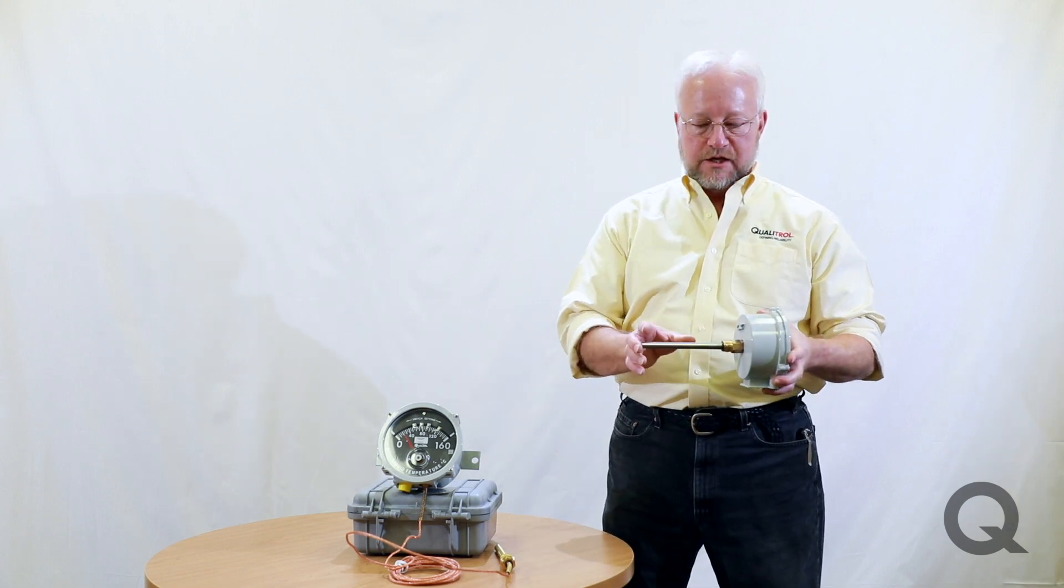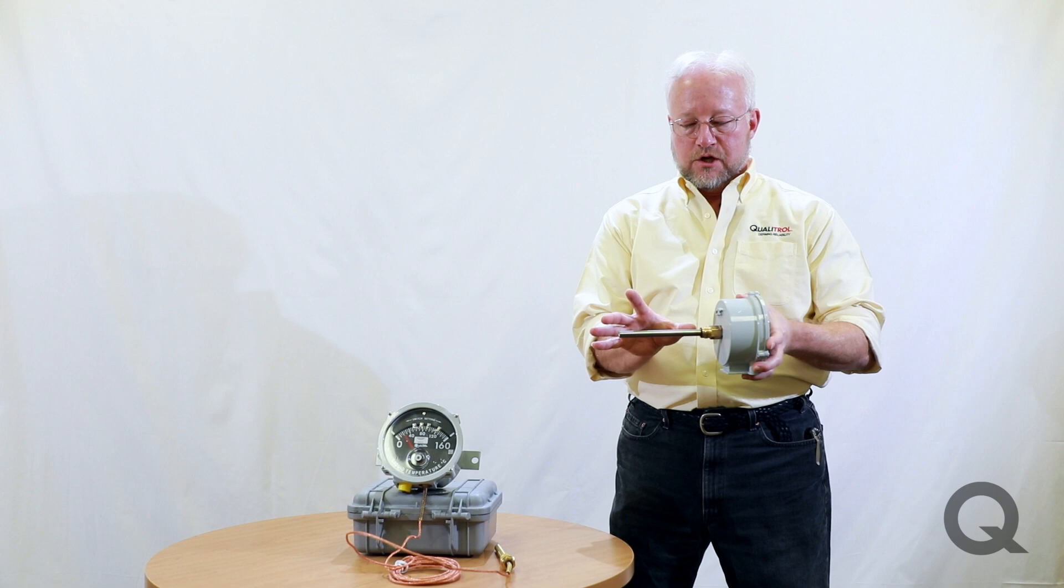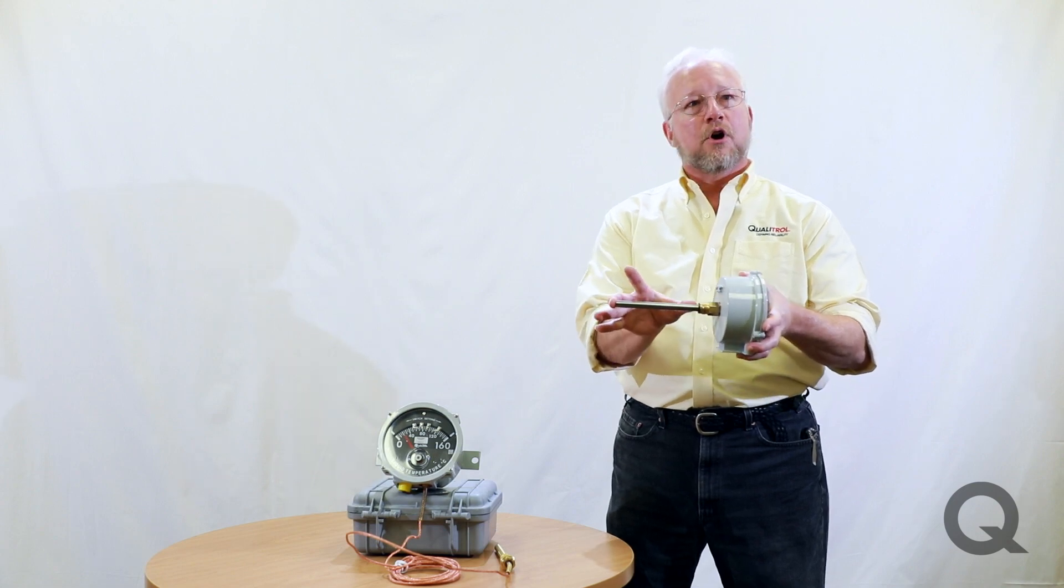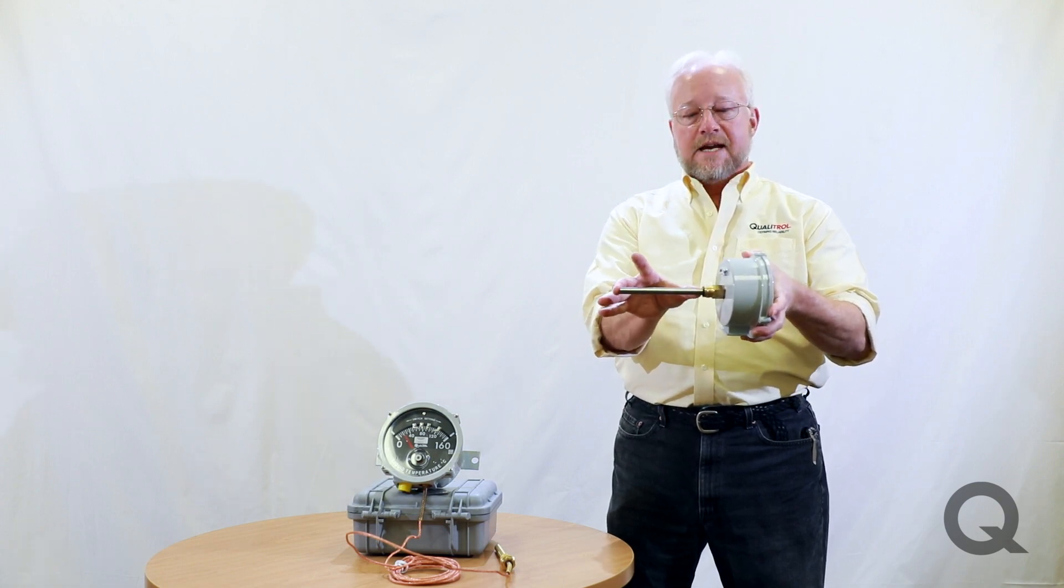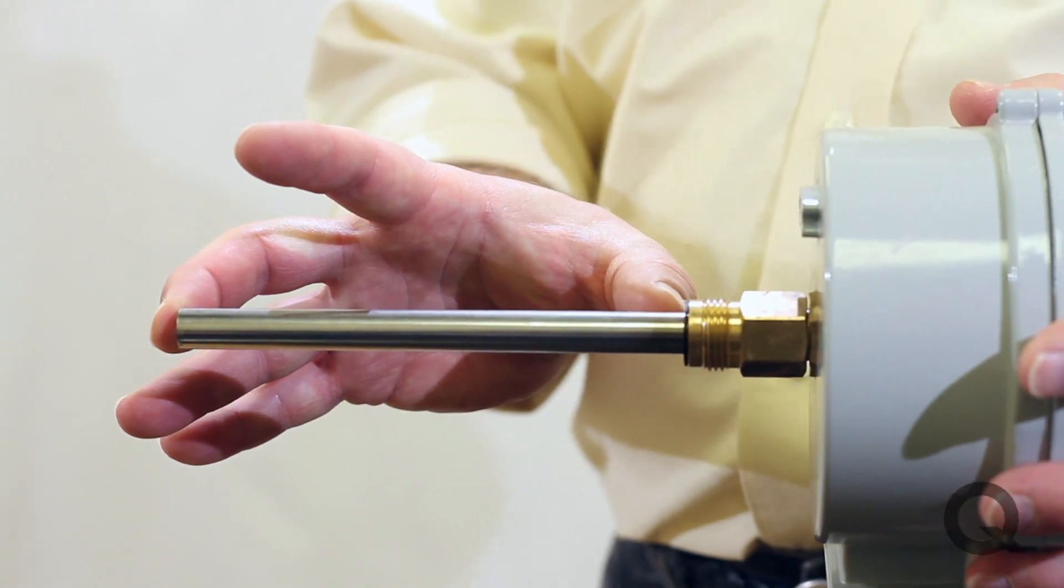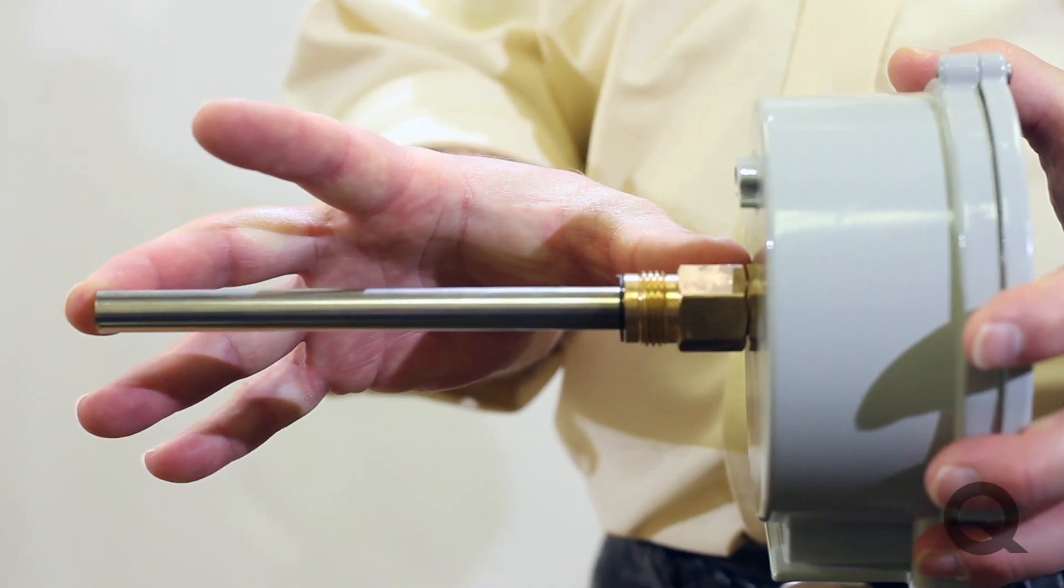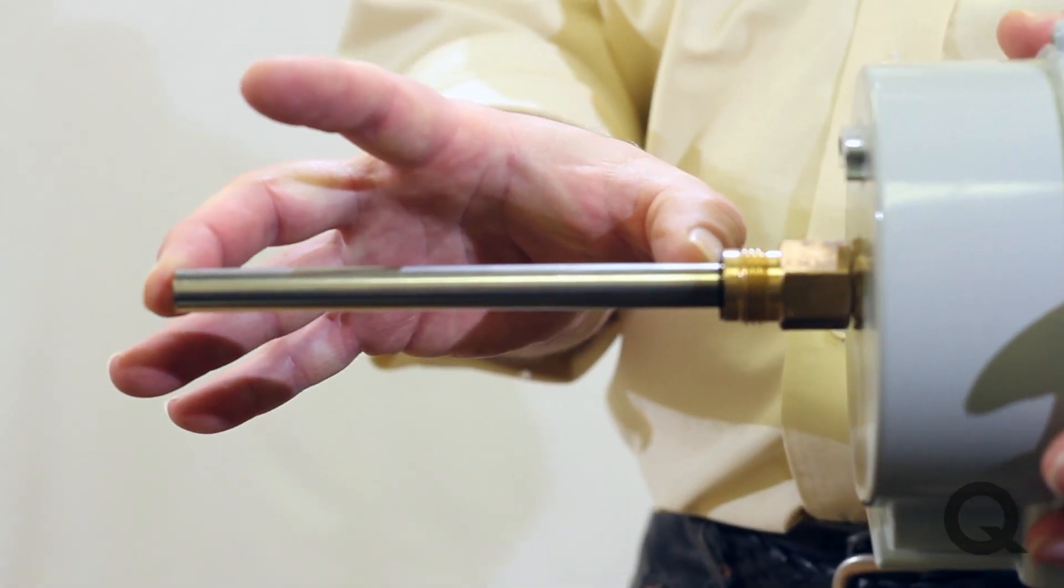The length of the probe is fairly easy to measure. You want to measure from the tip of the probe to the end of the threads right here. You don't want to measure all the way up to the body, right to the end of the threads.